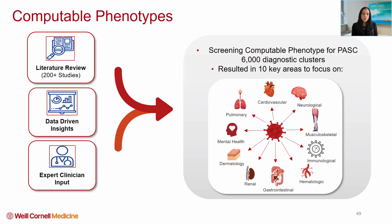Computable phenotypes — this is where I think the science can be exceedingly helpful to clinicians. What we're doing right now is we've reviewed 200-plus studies on PASC. In the last year, there have been more than 200 studies in the literature about post-acute COVID. We are looking at data, developing data-driven insights about computable phenotypes, and then soliciting expert clinician input. We have developed a screening computable phenotype for PASC consisting of 6,000 diagnostic clusters, which has resulted in 10 key areas of focus — organ systems like neurological issues, mental health issues, immunologic, musculoskeletal, and so on.